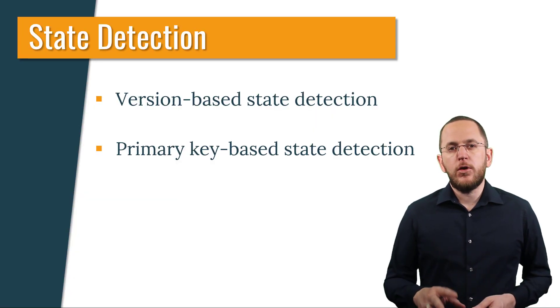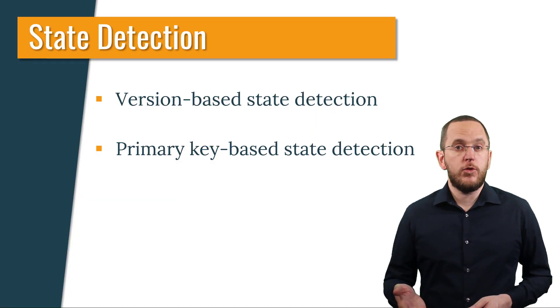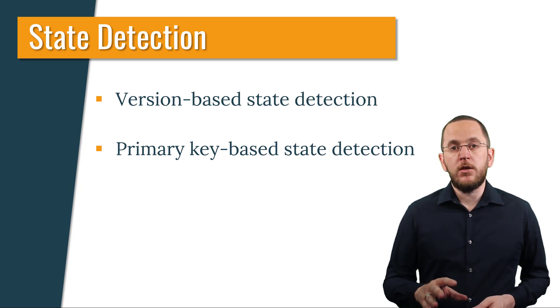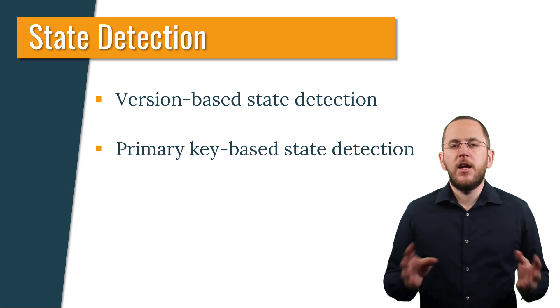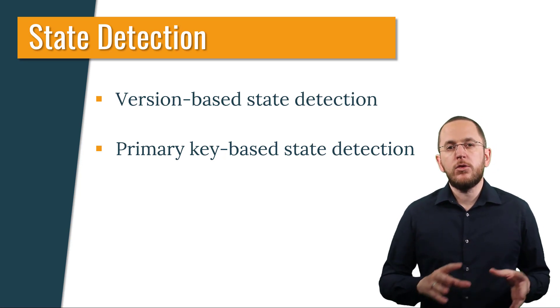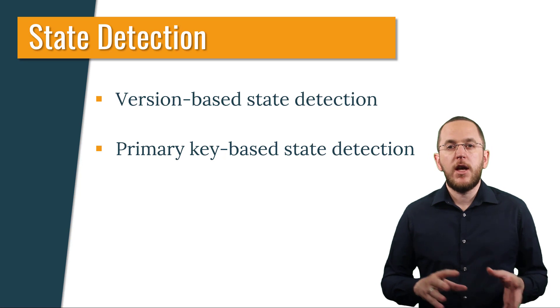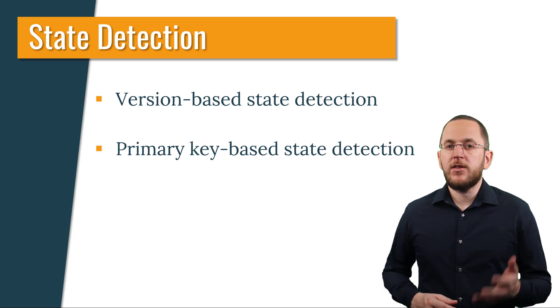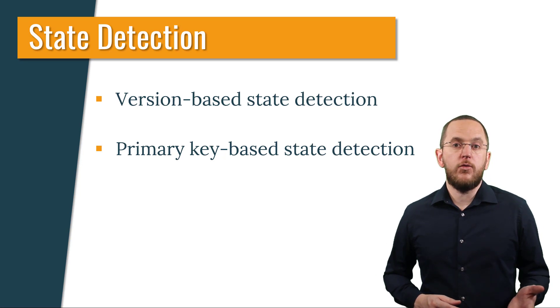If you are using optimistic locking to prevent concurrent modifications, you annotate one of your entity's properties with @version. Your persistence provider, which in most cases is Hibernate, then uses that property to track the version of that object and its mapped database record. The JPA specification defines different ways and data types to track the version of an entity. The easiest and most efficient one is a simple counter that your persistence provider increments during each write operation.